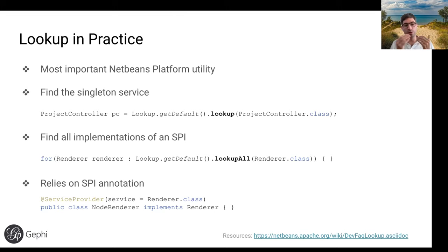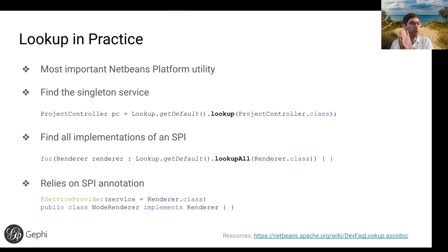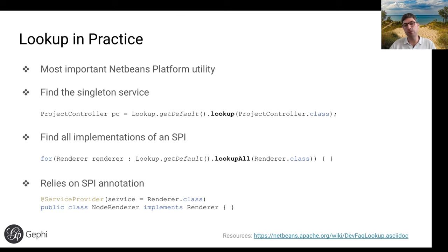This is how you extend Gephi's functionality in the UI. For example, when you select a layout in Gephi, the dropdown behind the scenes does a LookupAll call: it asks for all layout algorithms currently in the Java classpath, finds them all, and lists them in the dropdown. This pattern applies everywhere you have a file menu to export, select a renderer, select a layout, or select filters — those lists and trees are all powered by LookupAll calls at runtime to find the implementations.